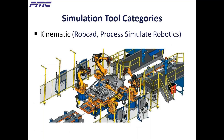Kinematic tools like Siemens Technomatix Robcad and Process Simulate Robotics let you analyze the real-time motion of robotic work cells, optimize cycle times, optimize welding sequences, and increase process quality.